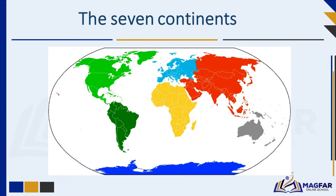Continents are large, distinct landmasses that make up the Earth's surface. These continents are usually separated by oceans. There are seven continents on Earth. Each continent has its own story, with different people, landscapes, and adventures waiting to be explored. Together, they make our world a diverse and exciting place.